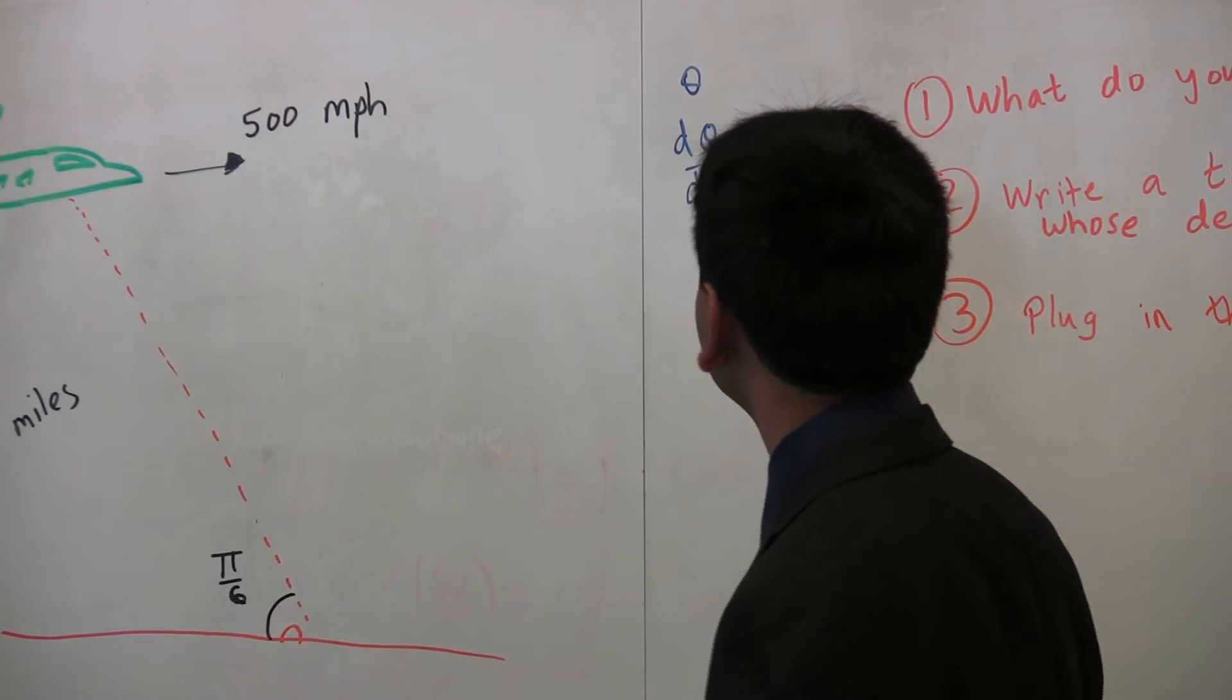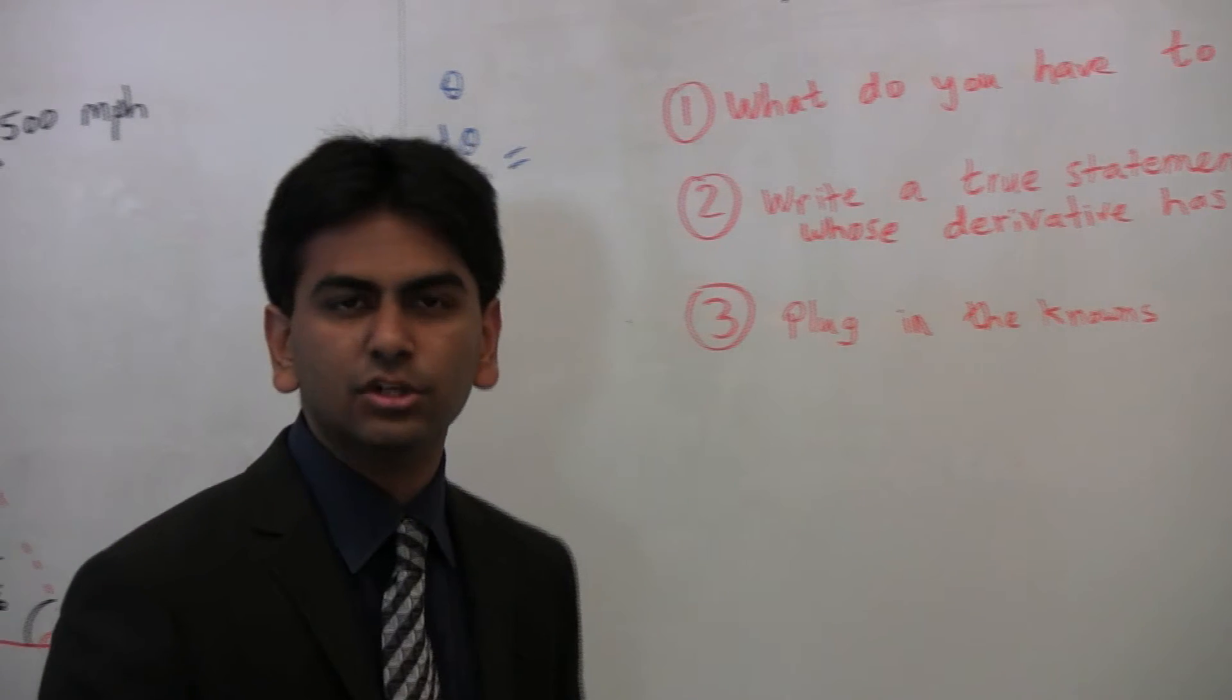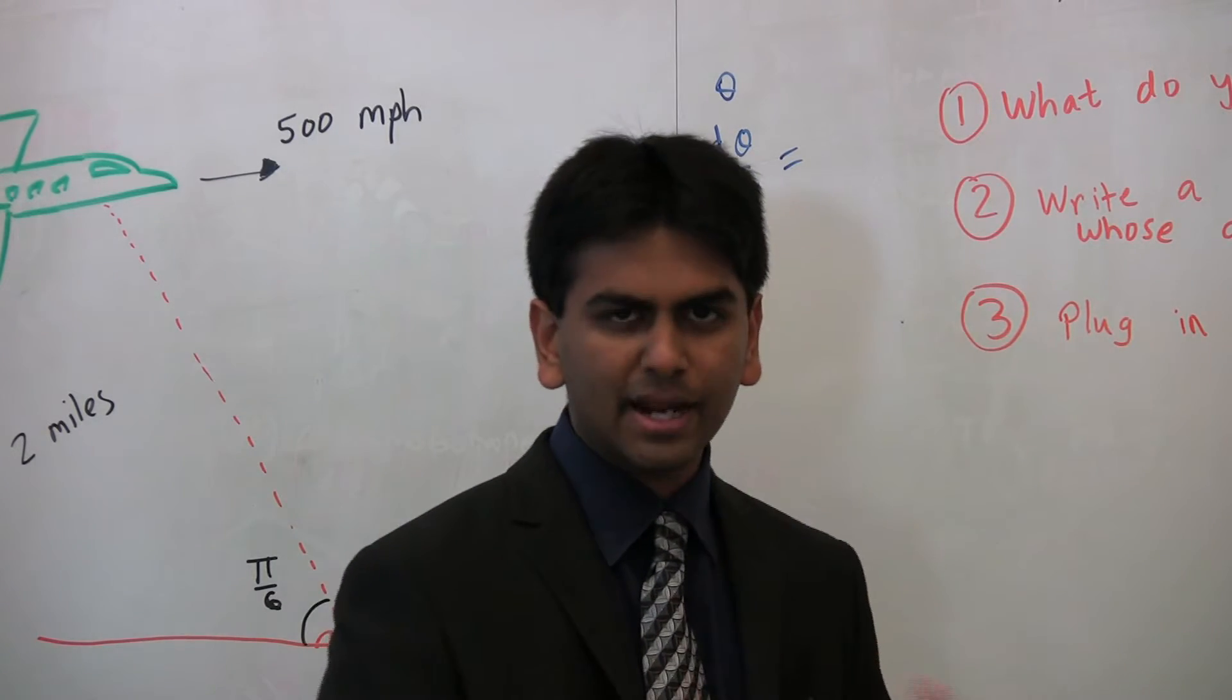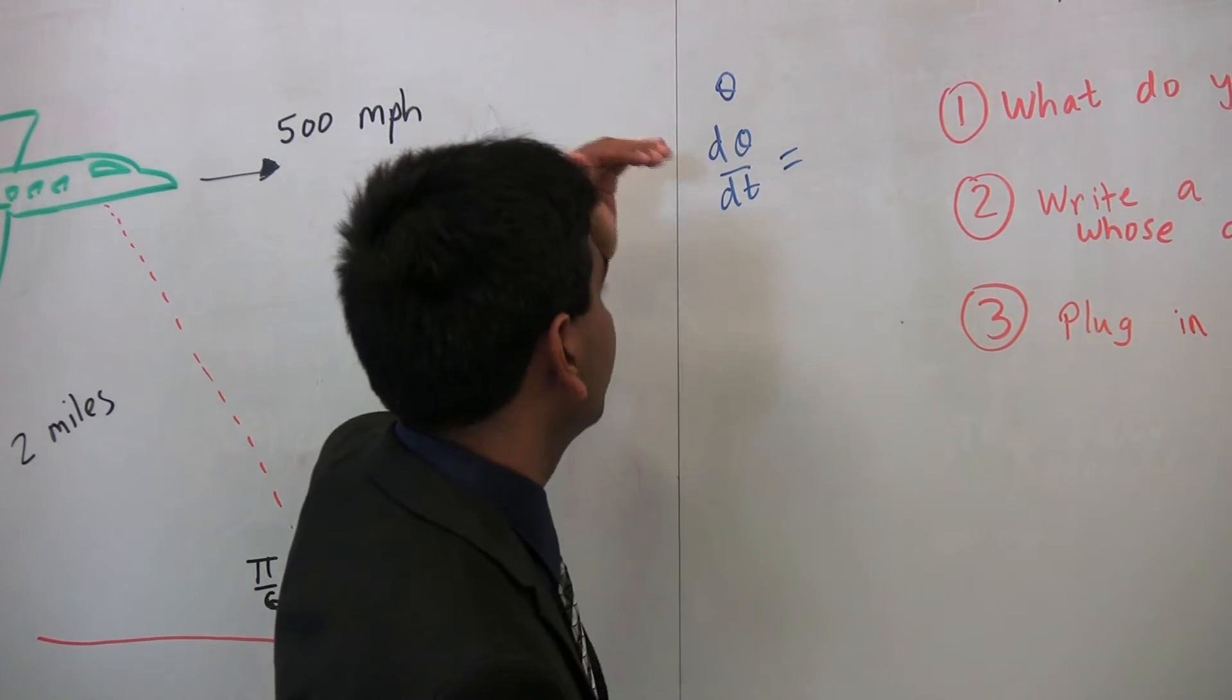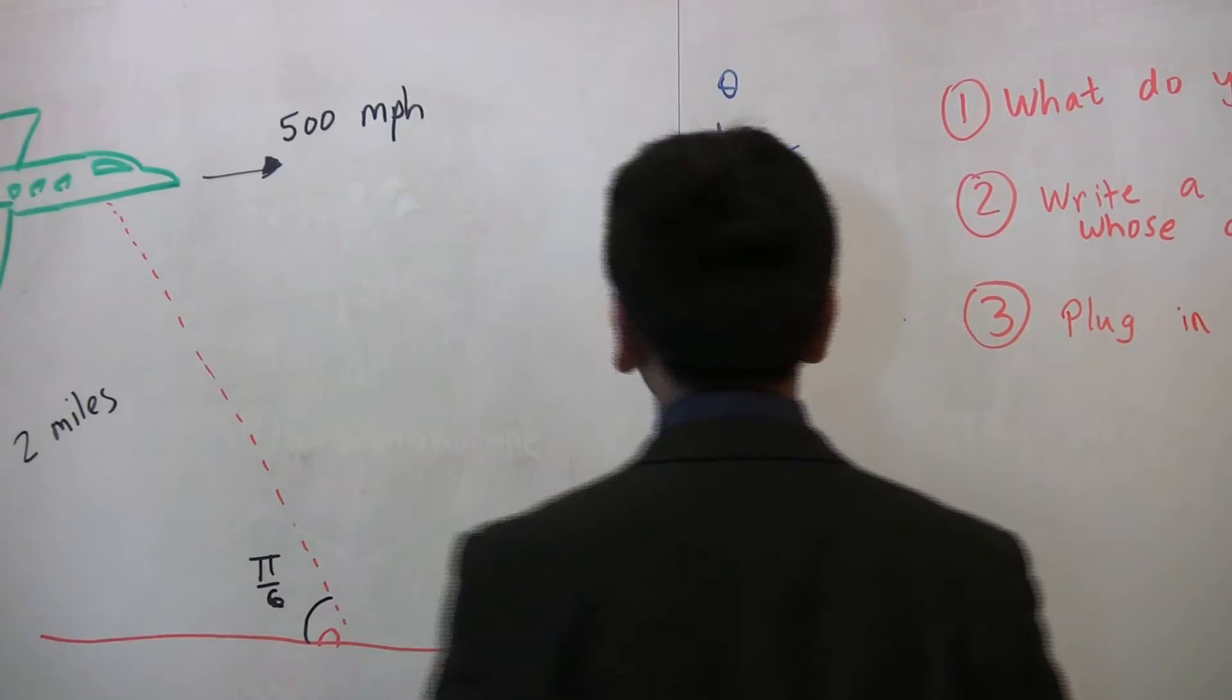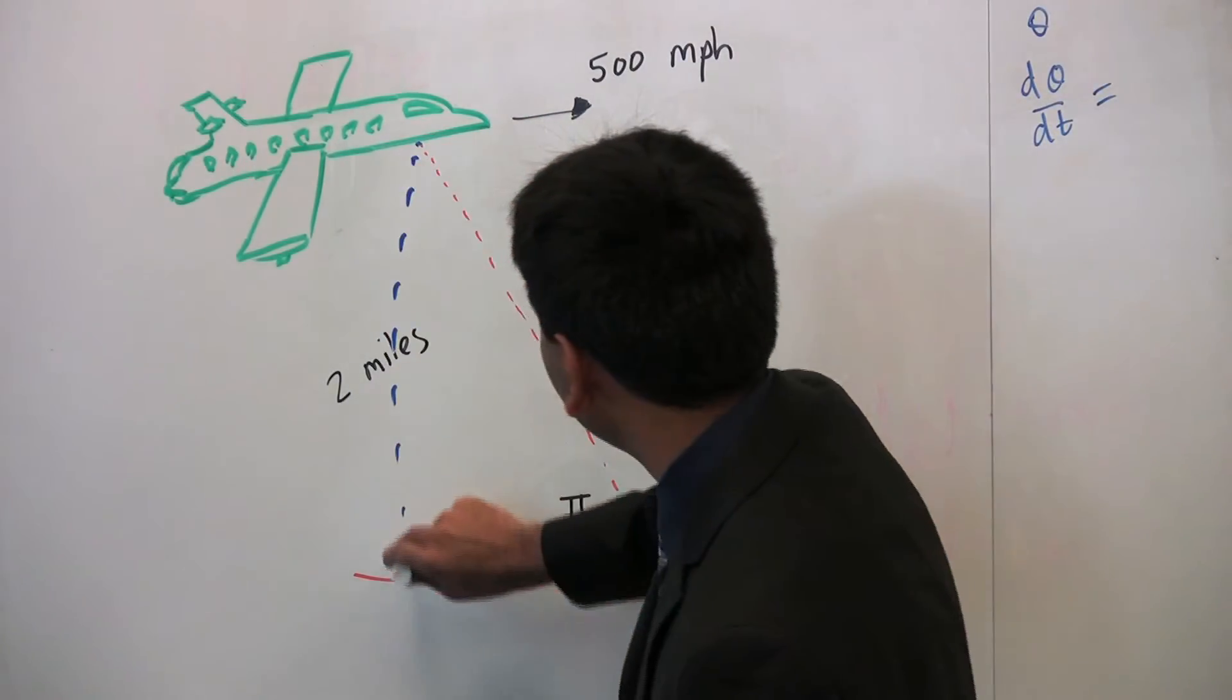So, now the second thing that we have to do is write out a true statement whose derivative has dθ/dt. So, really all we have to do is write out a statement that contains theta. Once we write out a statement that contains theta, we can take its derivative and then we'll have dθ/dt, then we can just solve for it. So, what statement should that be? Well, looking at this over here, we kind of see a triangle.